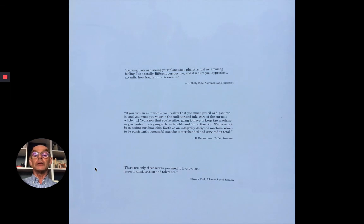And here are one or two things people have said, like an astronaut who said, looking back and seeing your planet as a planet is just an amazing feeling. It is a totally different perspective and it makes you appreciate actually how fragile our existence is. And at the bottom, Oliver, who wrote the book, has said, there are only three words you need to live by. Son, respect, consideration and tolerance.